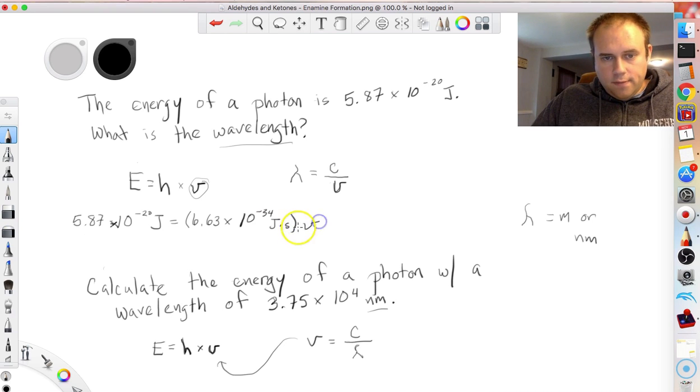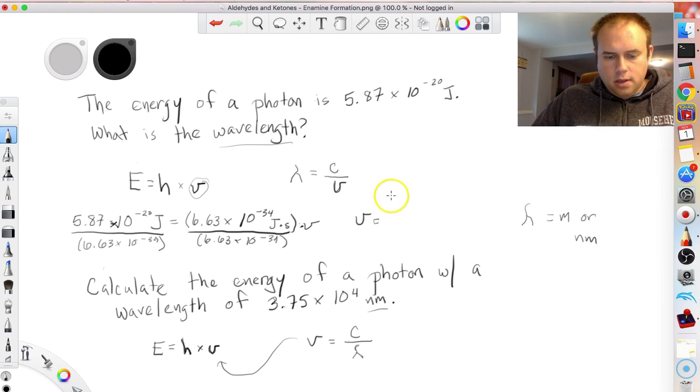So what I would do is I would divide through by Planck's constant. So I would say divide through by 6.63 times 10 to the minus 34 there, and do the same thing over here. And that'll give me what my frequency is. So if you plug that into your calculator, the answer that you should end up with is that the frequency was equal to 8.85 times 10 to the 13th. So that is the frequency.